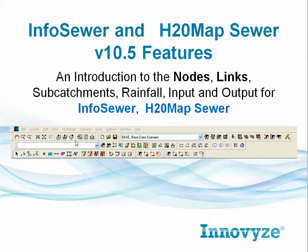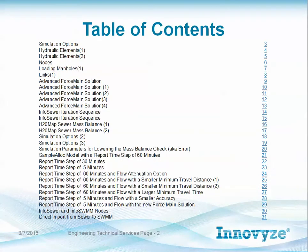We're going to look at basically the engine. The engine is exactly the same in InfoSewer and H2O MapSewer — what's different is the interface. So we'll concentrate on the engine similarities. Here's a table of contents: we'll talk about hydraulic elements, nodes, loading manholes, the advanced force main solution which is brand new as of two years ago, EPS solution for InfoSewer for better force main simulations, and then the input, output, and simulation options.